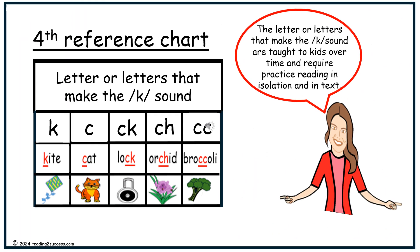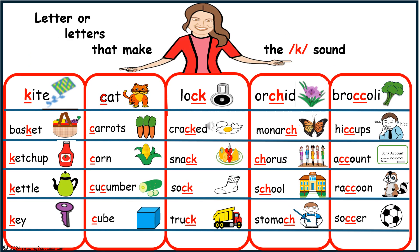Fourth reference chart. Letter or letters that make the K sound: K as in kite, C as in cat, CK as in lock, CH as in orchid, and CC as in broccoli. This reference chart provides a list of words for the letters that make the K sound.